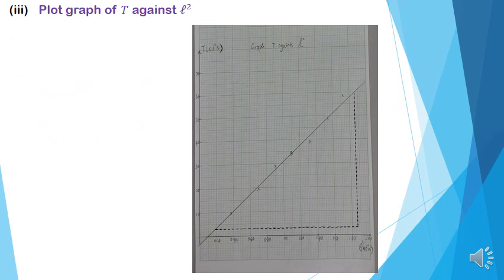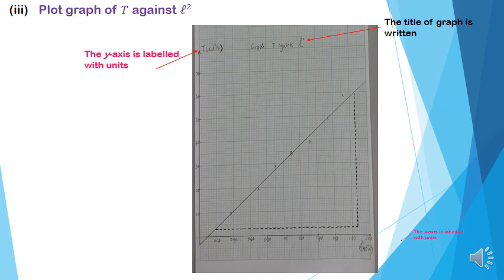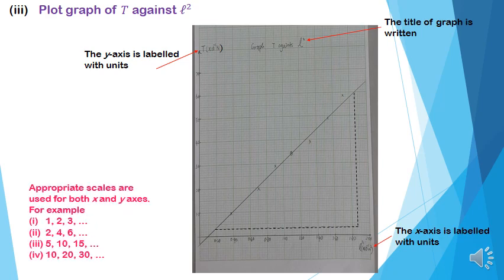Roman 3: plot graph of T against L squared. The title of the graph is written. The y-axis and x-axis are labelled with units in brackets. Use appropriate scales for both x and y-axis — for example, in multiples of 1, 2, 5, or 10 — so that the centric point and data points can be marked on the graph easily with the naked eye without relying on a calculator.